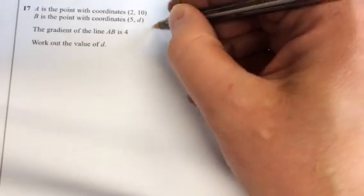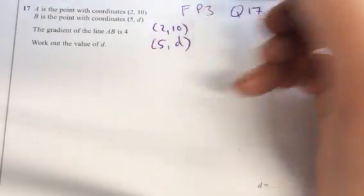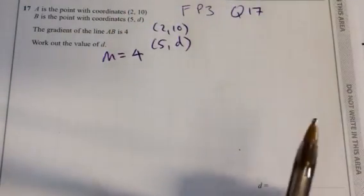We have A as the point (2, 10), B as the point (5, d), and they give us that the gradient is 4. We need to solve for d.